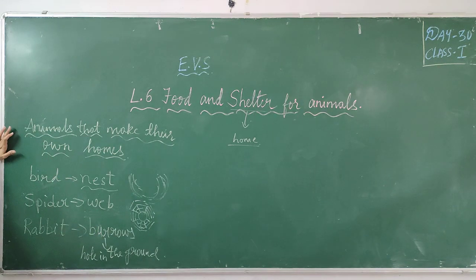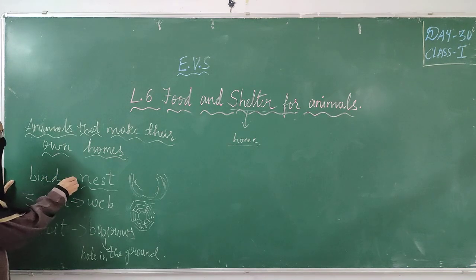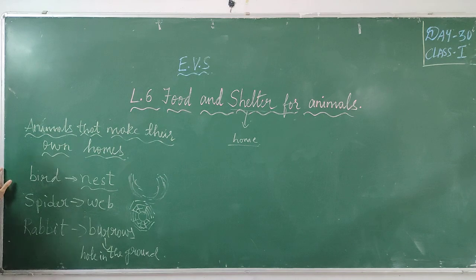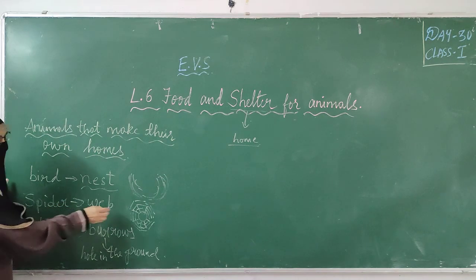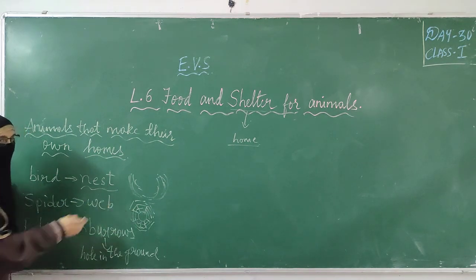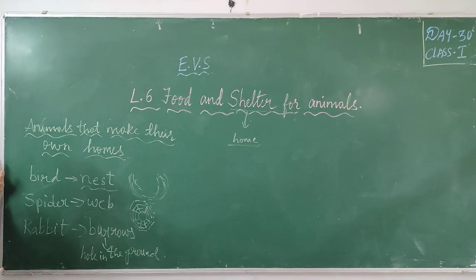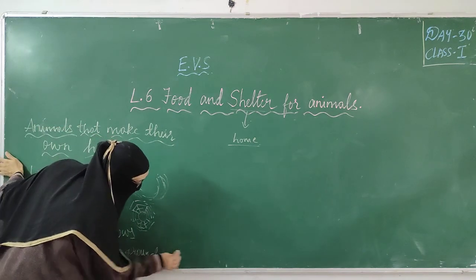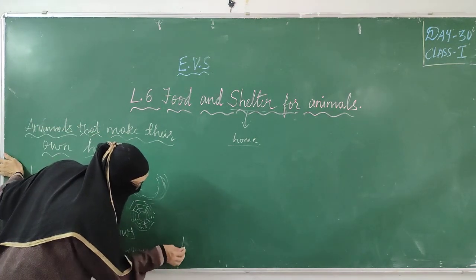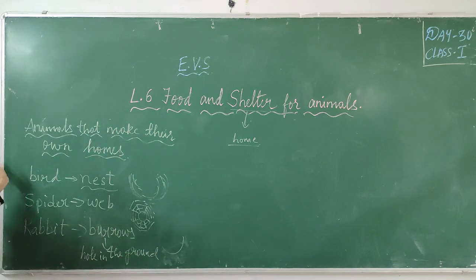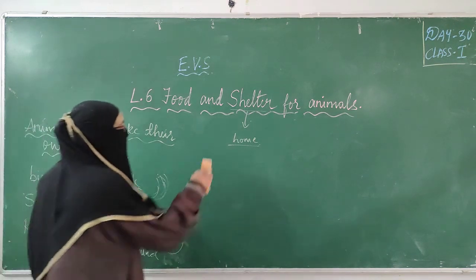These are the animals that make their own homes. Birds make their own home, called a nest. Spider lives in a web that it makes itself. Rabbit lives in a burrow — they make a hole in the ground and live in it. These are the animals that make their own homes.